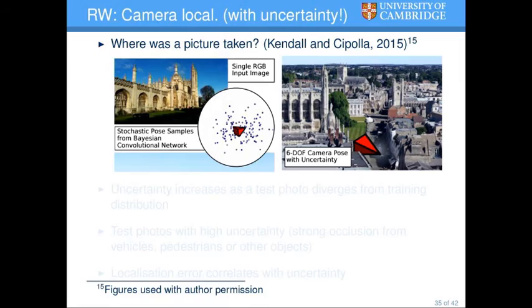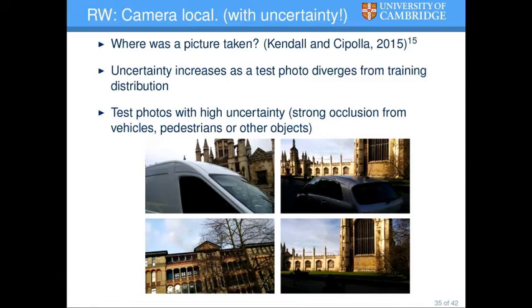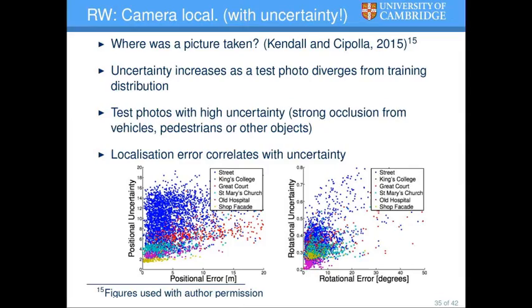In the camera pose localization setting, we can get uncertainty estimates as well. As you'd expect — like the cat being outside the distribution of dogs — as the test photo gets farther and farther from the data distribution, uncertainty increases. For example, if you have strong occlusion in the image, you would have high uncertainty. What's really cool is that there is very strong correlation between the uncertainty and the positional error.